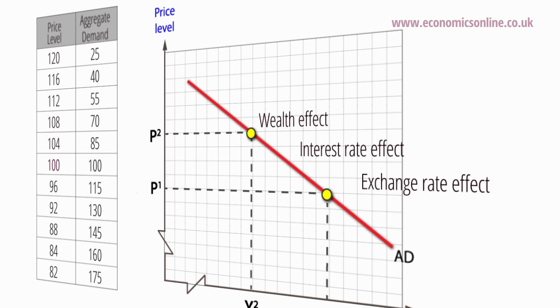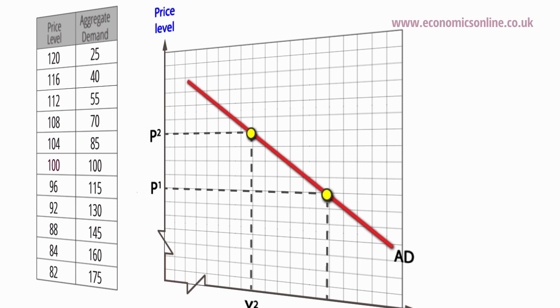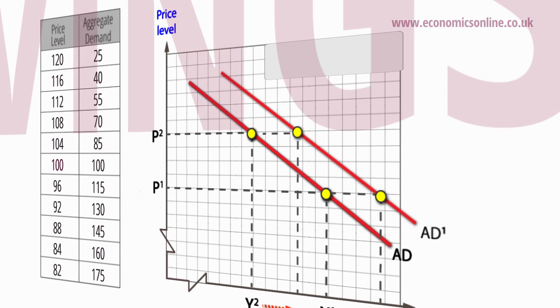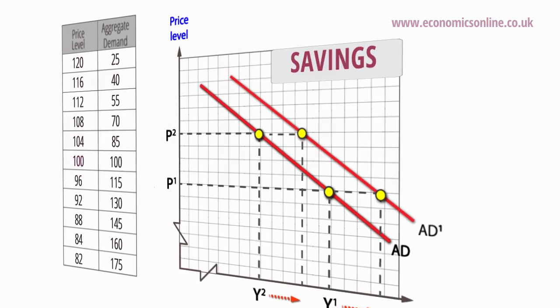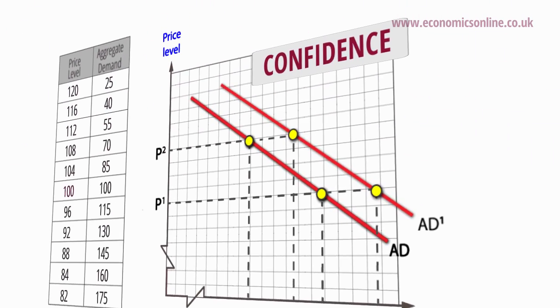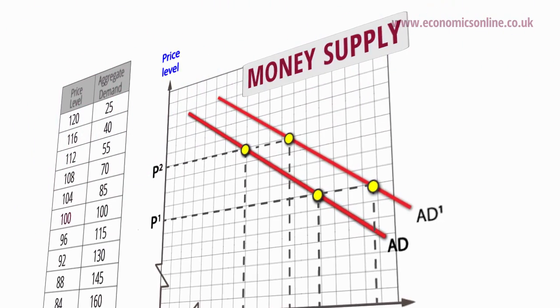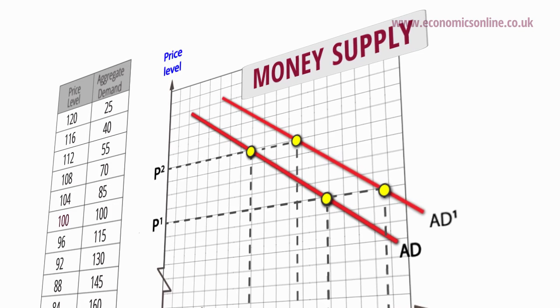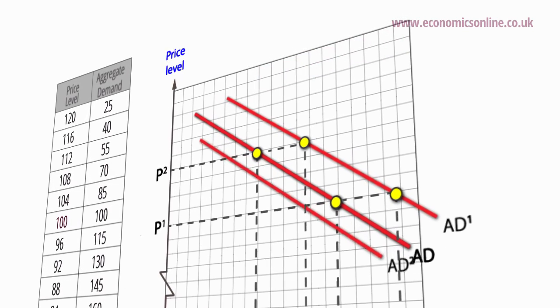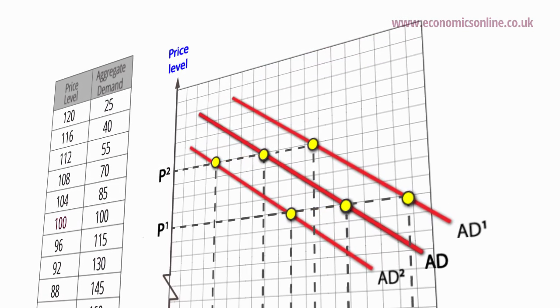If we now hold the price level constant, these effects are put on hold, and other factors come into play which shift the whole position of the AD curve. Shifts from changes related to consumption include changes in decisions to save, changes in confidence levels and expectations, and changes in the quantity of money or availability of credit. For example, decisions to save more will result in a shift to the left in the AD curve.